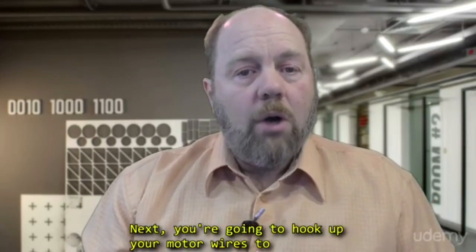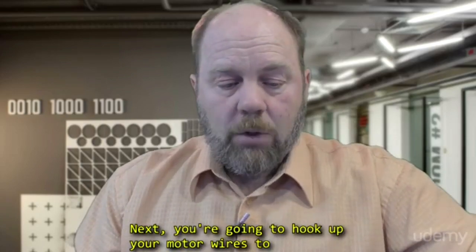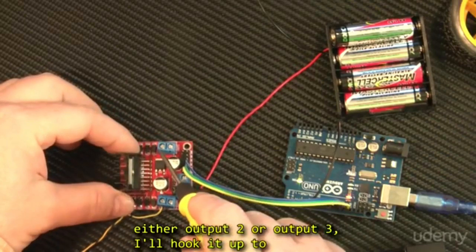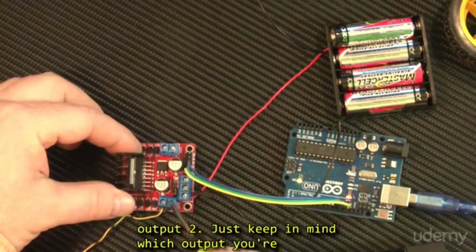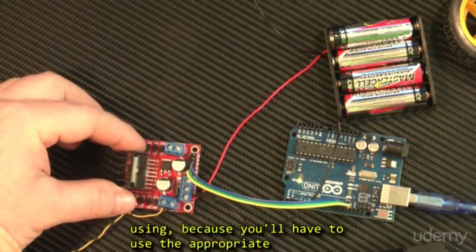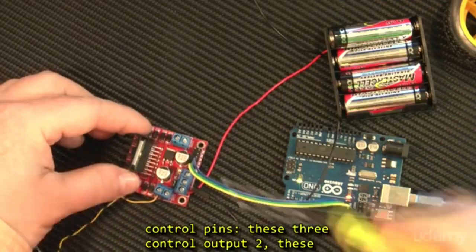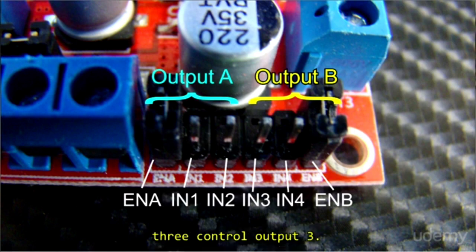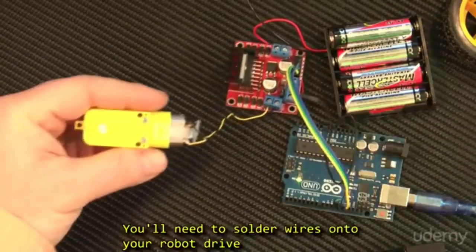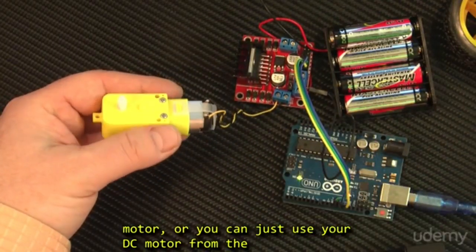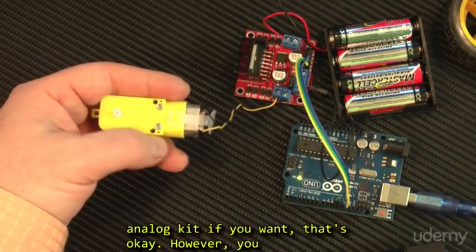So next, we're going to hook up your motor wires either to output 2 or output 3. I'll hook it up to output 2. Just keep in mind which output you're using, because you'll have to use the appropriate control pins. These three control pins control output 2, these three control output 3. You'll also need to solder wires onto your robot drive motor or you can just use your DC motor from the analog kit if you want, that's okay.